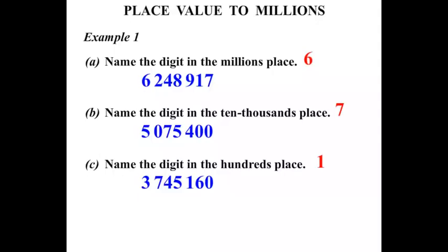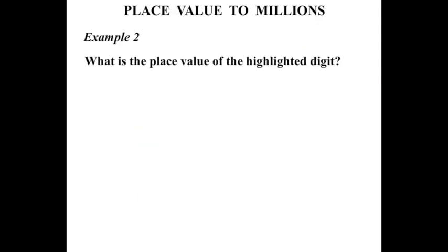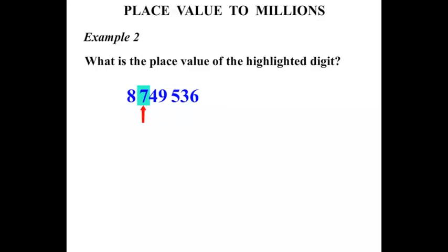Fantastic. Example two — what is the place value of the highlighted digit? The first number we've got is eight million, seven hundred and forty-nine thousand, five hundred and thirty-six. The seven is highlighted. What is the seven worth? We'll start again from the right: ones, tens, hundreds, thousands, ten thousands, hundred thousands. We've got seven lots of a hundred thousand — that is seven hundred thousand.